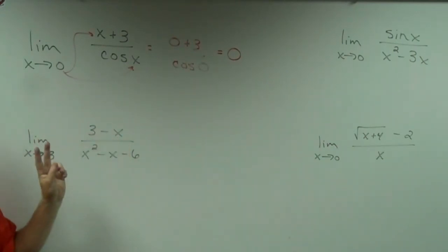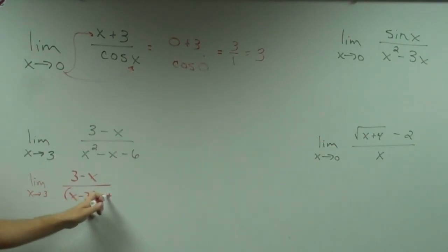That's 3 minus x. We're probably going to have to flip that around somewhere. But if I do this... So what do you got? x minus 3 and x plus 2.